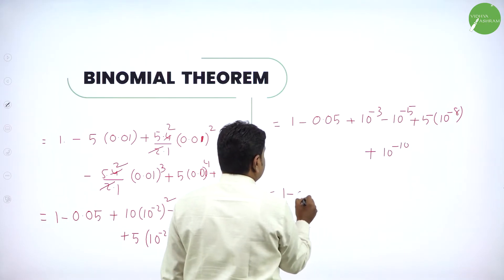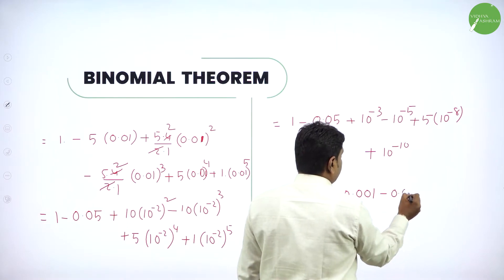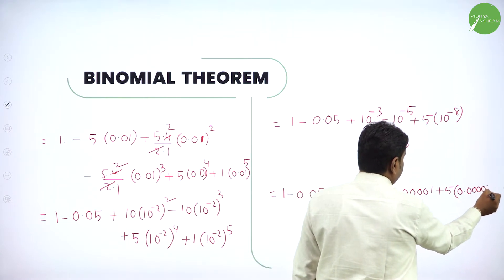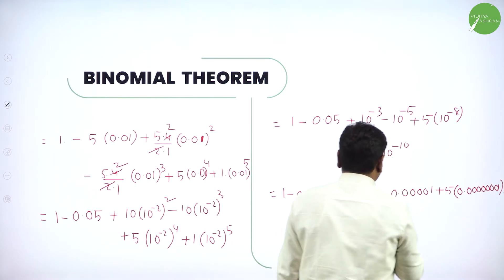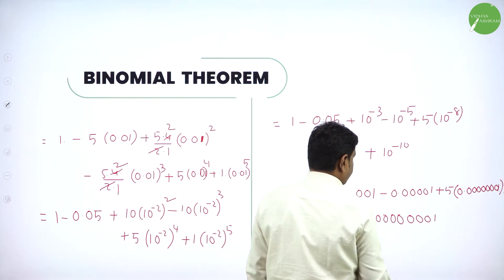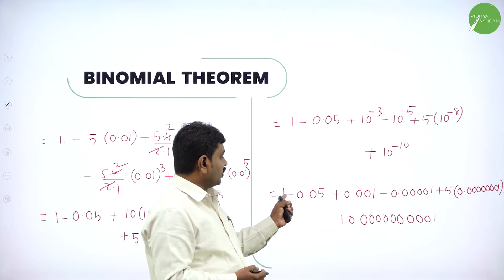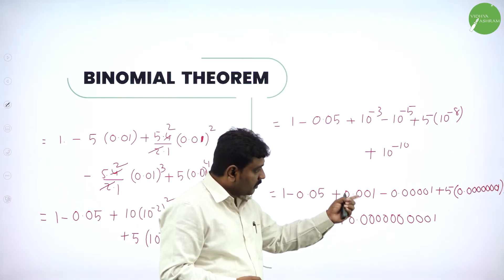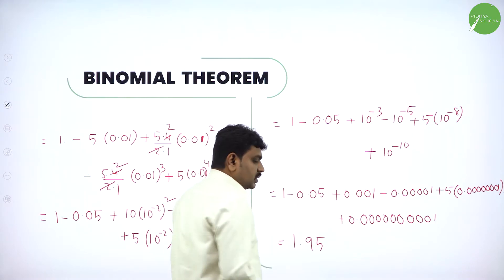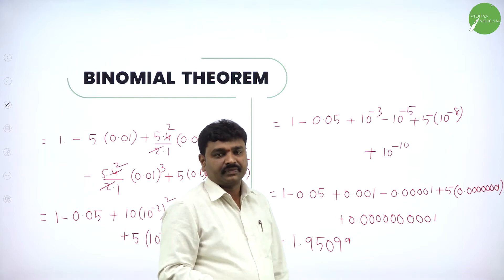Now simplify. It will become: 1 minus 0.05 plus 0.001 minus 0.000001, then 5 into 10 power minus 8 giving approximately 0.00000005, and then 10 power minus 10. You can use calculators to calculate and simplify. When you subtract 1 minus 0.05 plus 0.001 and so on, you will get the answer 0.95099.